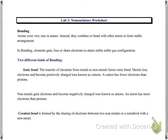In the last chapter, we learned about electronic configurations and we also learned how important it is to know the valence electrons — the electrons present in the outermost shell. Atoms exist very rarely in nature. What they do is combine with other atoms to form a stable arrangement. They can combine by either losing, gaining, or sharing electrons to attain the stable noble gas configuration.